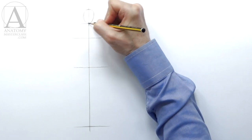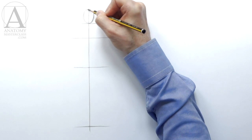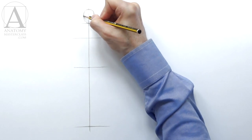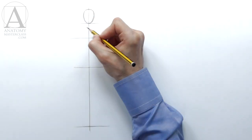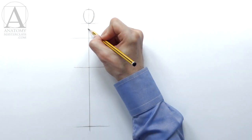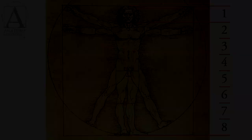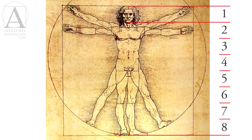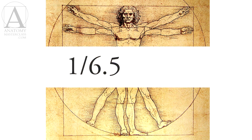The smallest division is one-eighth of the body. This is the size of a head — it would fit eight times in the total figure height. Not every adult person has a one-to-eight head-to-body ratio. On average, this ratio is between one-to-six-point-five and one-to-eight.